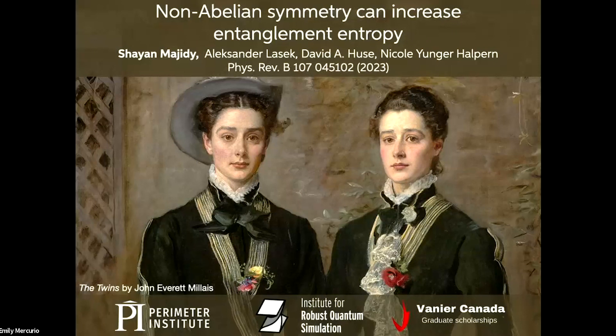In a twin study, you have two people who are at least ideally identical in every way except for one. What that allows you to do is isolate the effect of that one thing on something else. Here we are interested in isolating the effects of non-commuting charges or non-abelian symmetries on entanglement entropy. So first we had to build a pair of twins, and then we could study them.